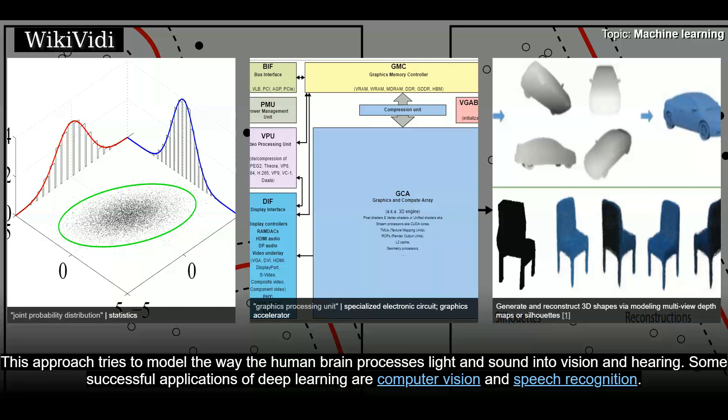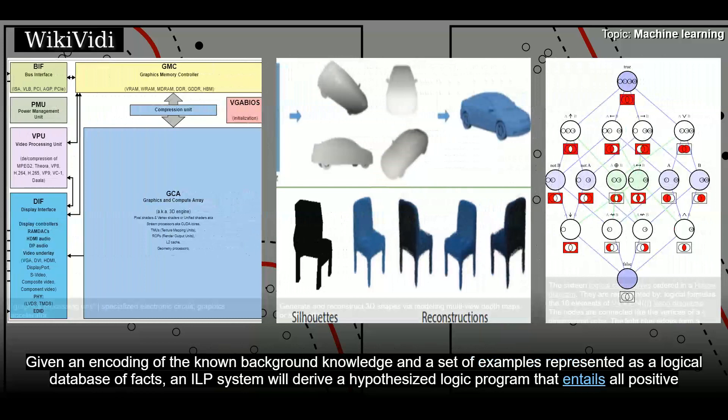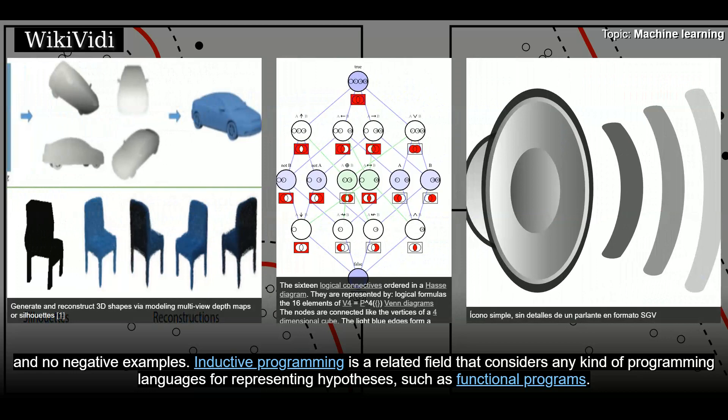Inductive logic programming. Inductive logic programming is an approach to rule learning using logic programming as a uniform representation for input examples, background knowledge, and hypotheses. Given an encoding of the known background knowledge and the set of examples represented as a logical database of facts, an ILP system will derive a hypothesized logic program that entails all positive and no negative examples. Inductive programming is a related field that considers any kind of programming languages for representing hypotheses, such as functional programs.